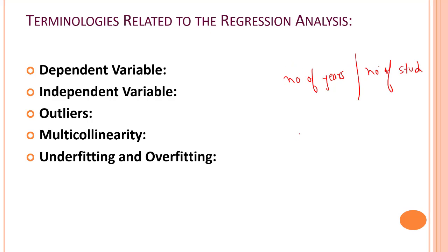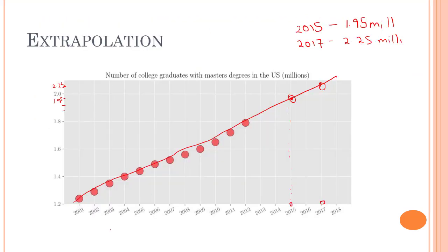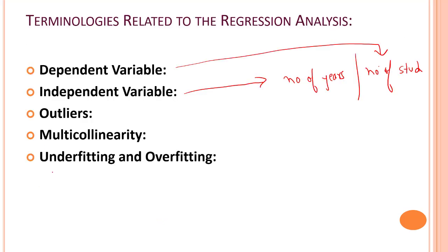Can you guess what is the dependent variable and what is the independent variable? Number of years is the independent variable and the dependent variable is number of students. From this graph itself, you can see that whatever the year will be, the value of the number of students will gradually increase or decrease.